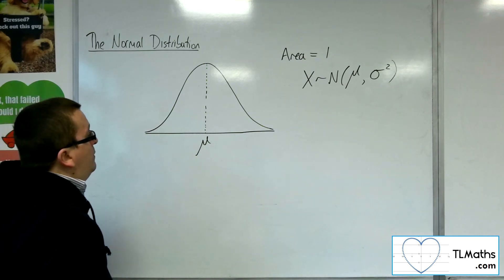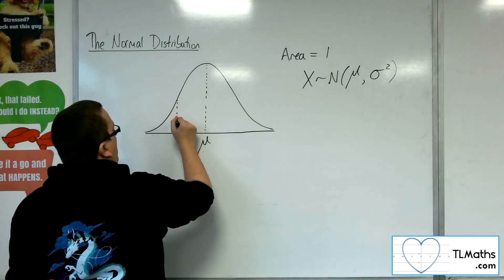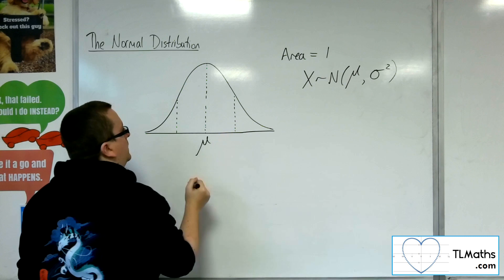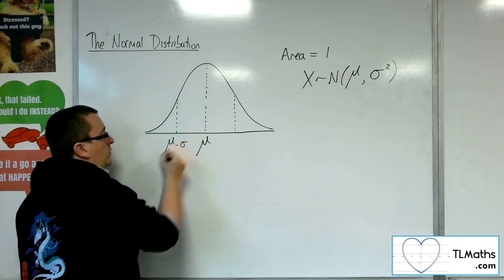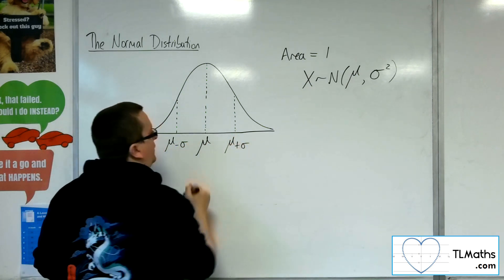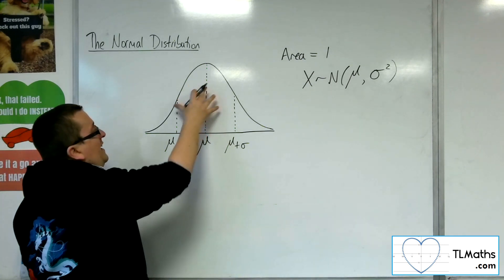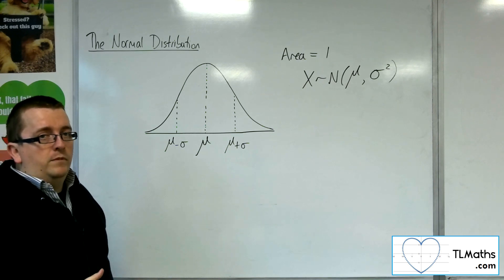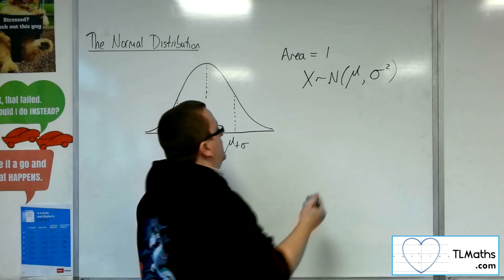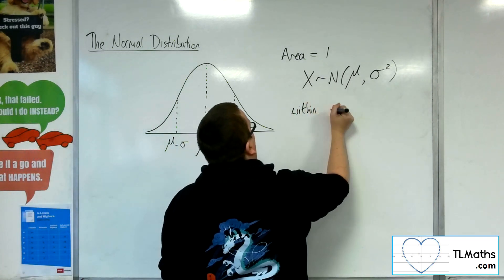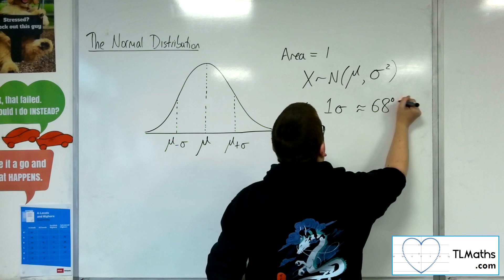Okay, so when we talk about standard deviations away from the mean, then if we just look at one standard deviation away, then one standard deviation to the left, so mu take away one standard deviation and mu plus one standard deviation, this represents approximately 68% of the information. Okay, so 68% is contained within one standard deviation of the mean.